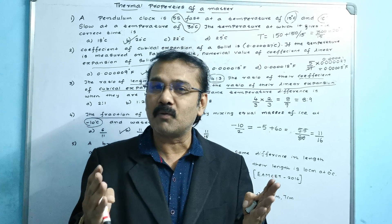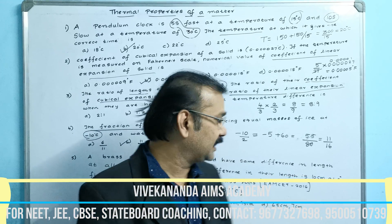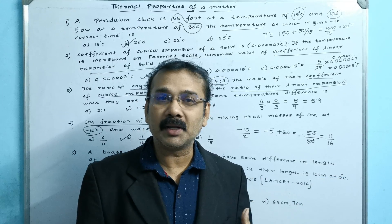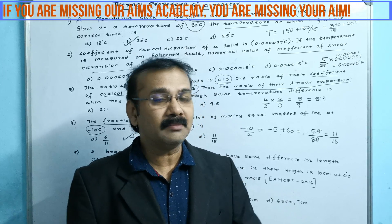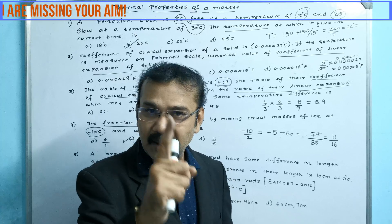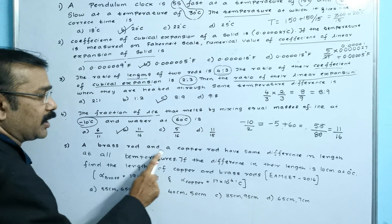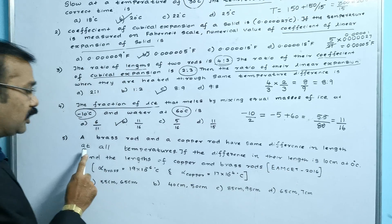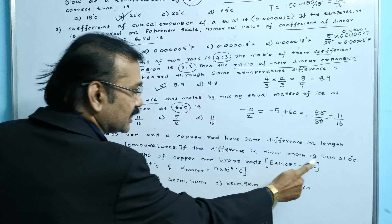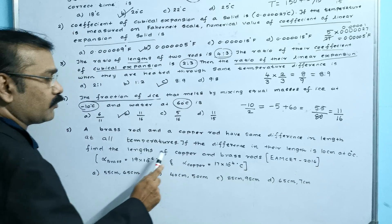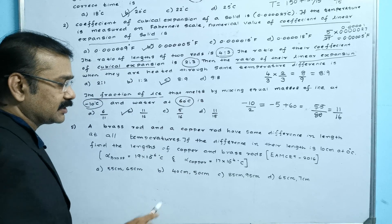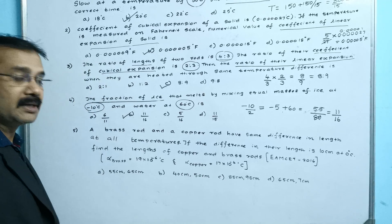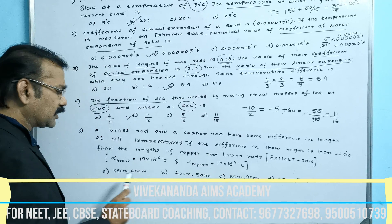The fifth question is very important — it has been asked in MSET 2016 and the same model appeared in NEET 2019. The question: a brass rod and a copper rod have the same difference in length at all temperatures. If the difference in length is 10 cm at 0 degrees Celsius, find the length of the copper and brass rods. Alpha brass is 19 × 10⁻⁶ per degree Celsius and alpha copper is 17 × 10⁻⁶ per degree Celsius. Options A, B, C, D are given.